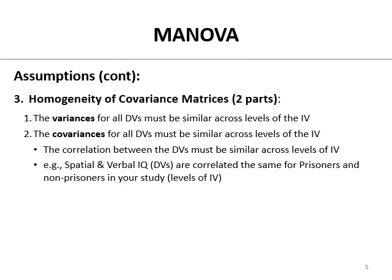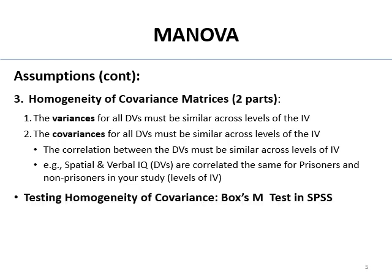For example, if you're looking at spatial and verbal IQ as DVs, and they are correlated the same for prisoners and non-prisoners in your study, that would satisfy this part of the assumption. The correlation between spatial and verbal IQ should be the same magnitude and direction for prisoners and non-prisoners. It's Box's M — not Mauchly's — that we use to test the homogeneity of covariance matrices assumption.